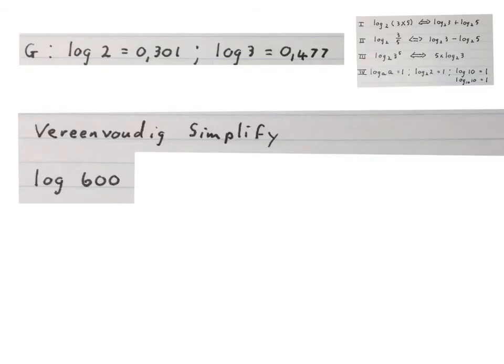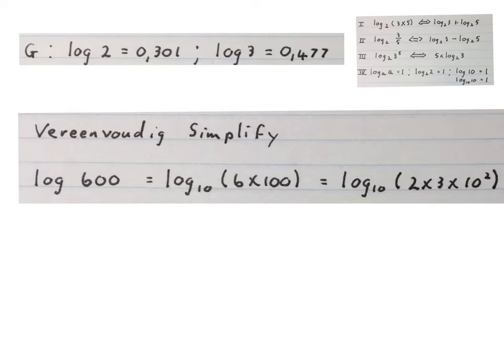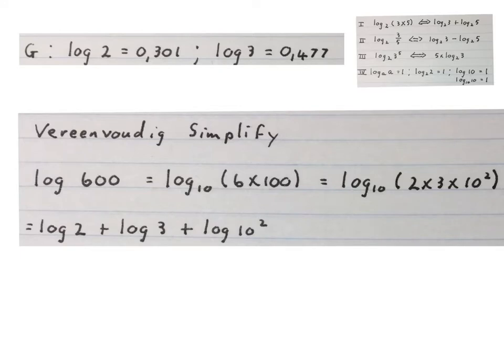So first question says simplify log 600 if log 2 is this and log 3 is this. Because there is no base the base is 10 and we break up the 600 into 6 times 100 which is then 2 times 3 times 10 to the power of 2. And the law 1 up here says if we multiply and we have a log with a base we put the log with a base next to each one of these numbers and we add them.